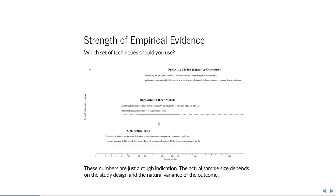In regularized linear models we do something very different: we identify effects on the outcome by shrinking coefficients of lesser influence, so what remains are the largest coefficients. The benefit of this shrinkage decreases at larger sample sizes — at very large sample sizes you might not need regularization and can just use any predictive model validated by cross-validation. Regularized models become practical from somewhere in the hundreds or perhaps thousands of samples.